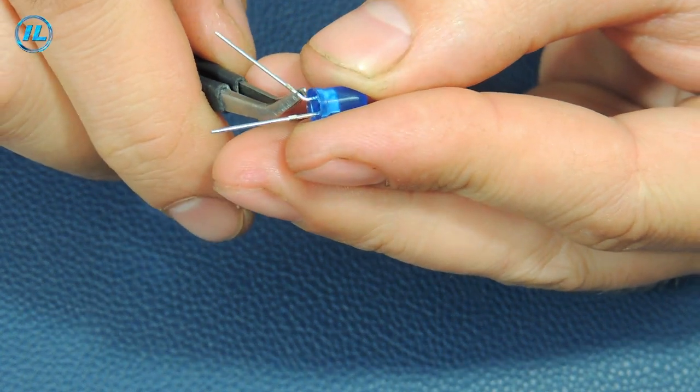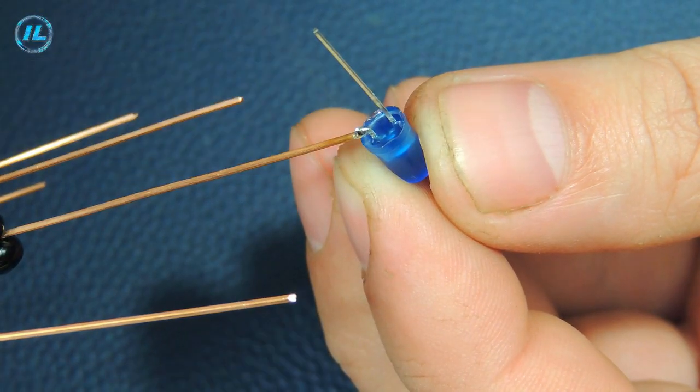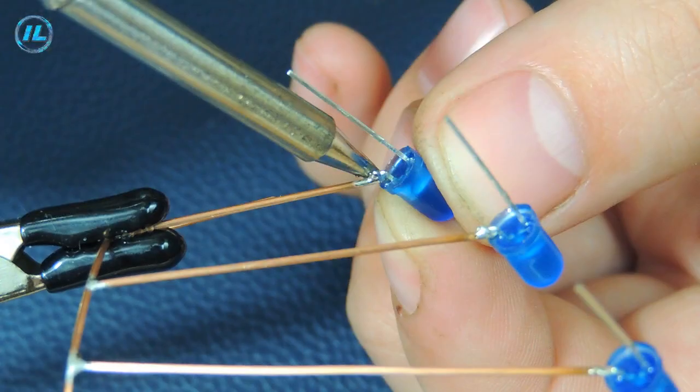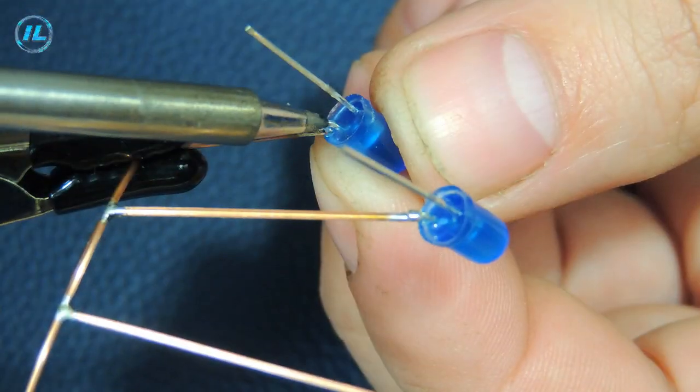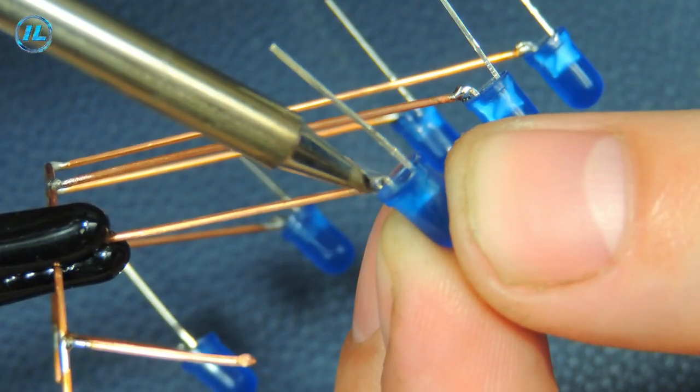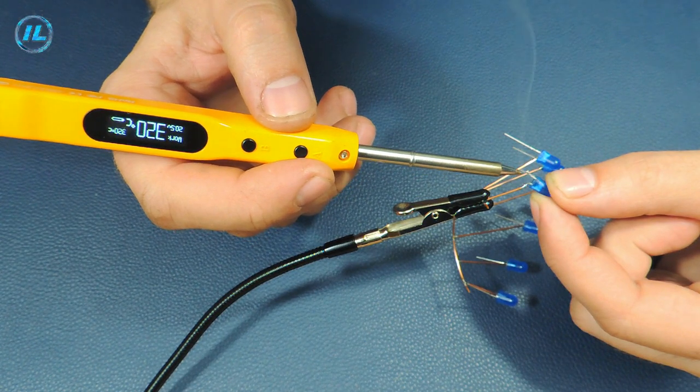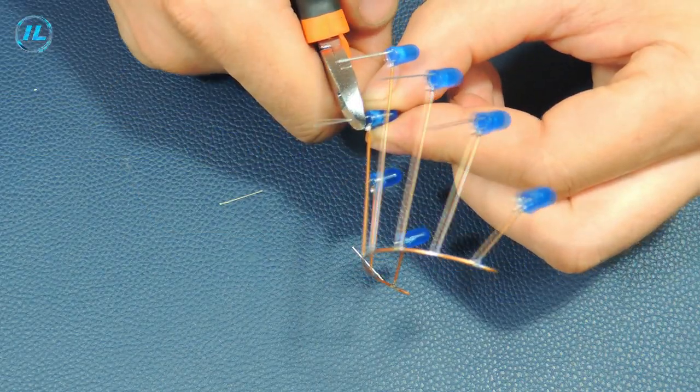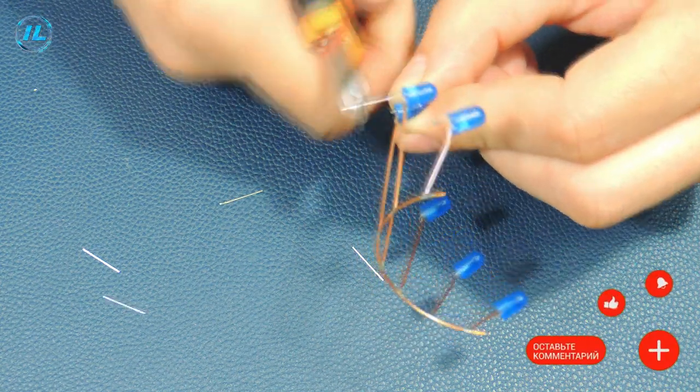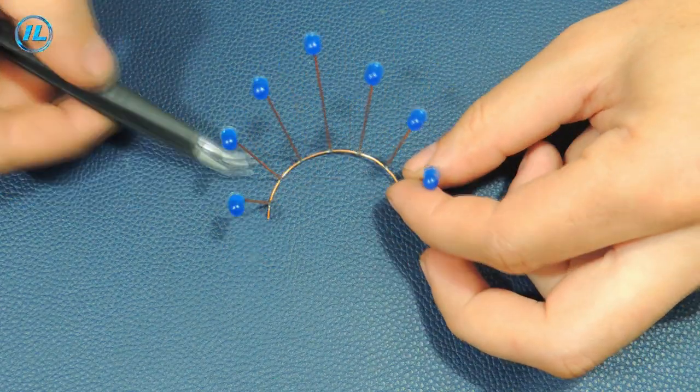Now I will solder and lead to each of the seven guides. The base of the flashing light is ready. Now I will put together the rest of the scheme.